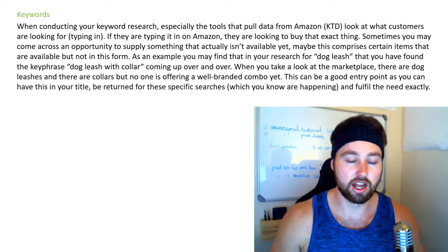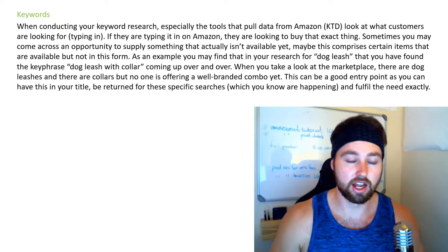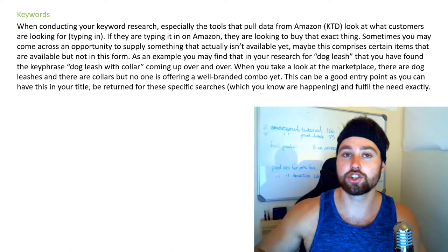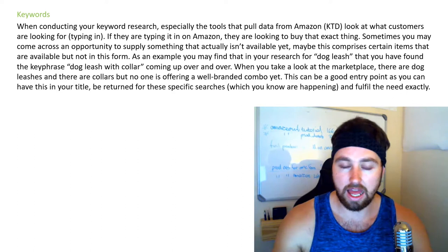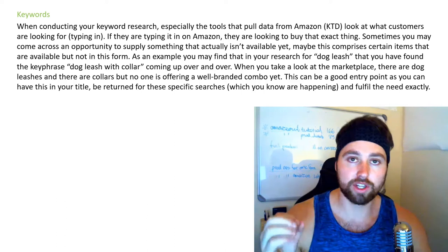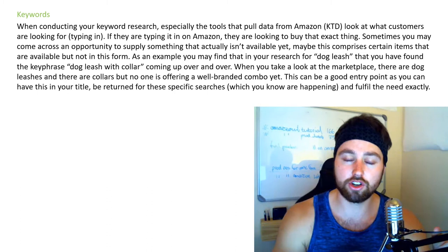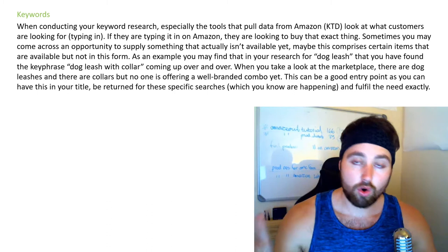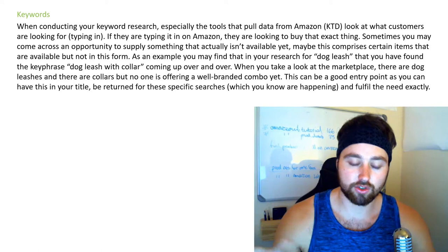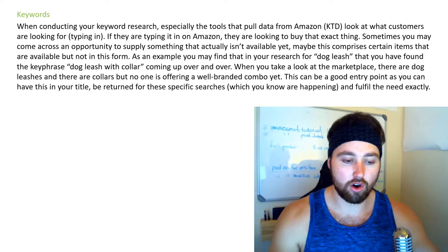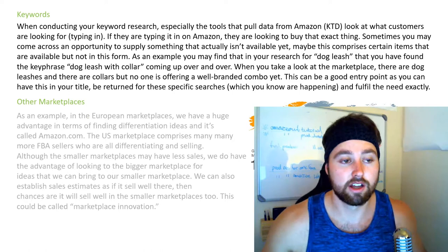This is where you can come in and actually offer what that consumer is really looking for. As an example, let's say you were looking at doing a dog leash, and in your research you keep seeing the keyword 'dog leash with collar.' If competitors are offering the dog leash and the dog collar separately but no one is offering those two together as one bundle, we know this is a search to buy that full product. This could be an opportunity for you to offer your own dog leash with collar and also use that exact keyword in your title. Sometimes you will actually see keywords that bring up a version of a product not even available on Amazon yet, and you can be the first to offer that product on that marketplace.